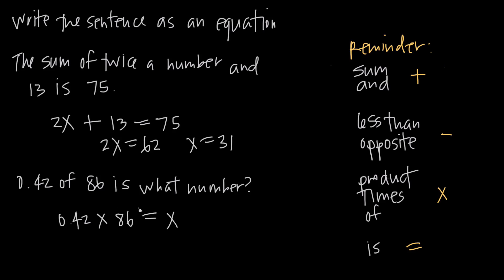Now we just say 0.42 times 86. That's 36.12 if we do the multiplication, is equal to x. So x is equal to 36.12 if we're looking for the number that's 0.42 of 86.